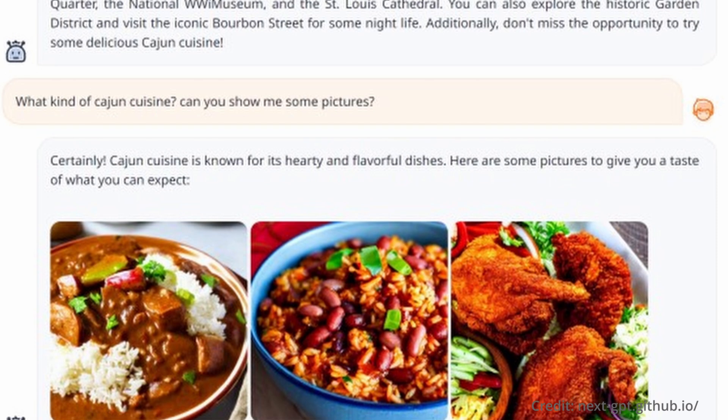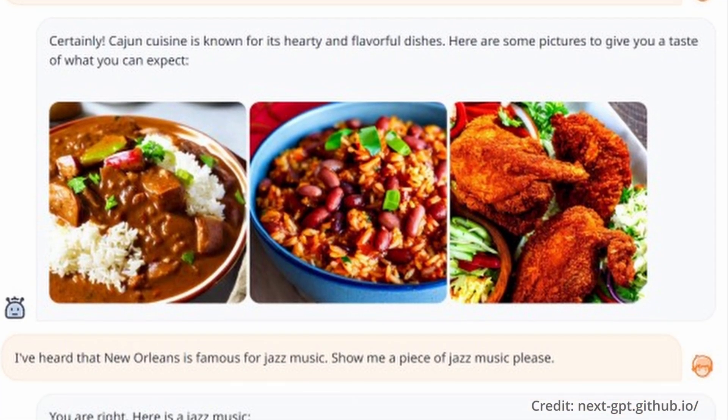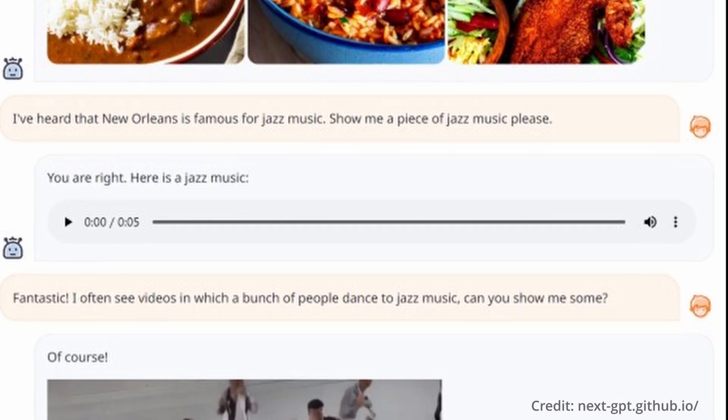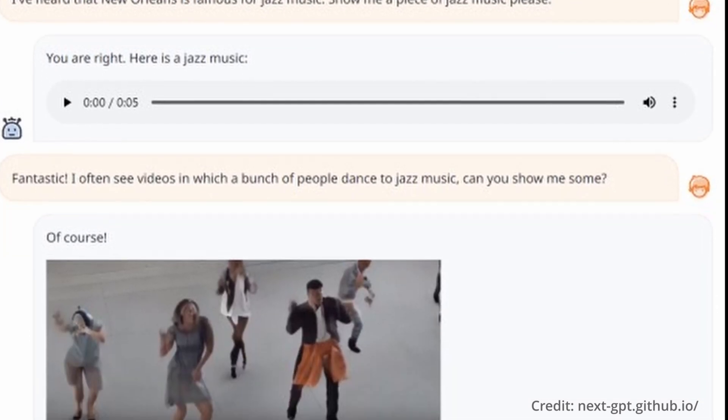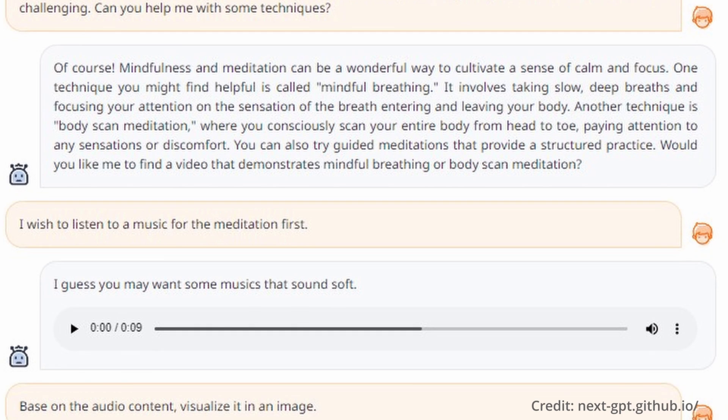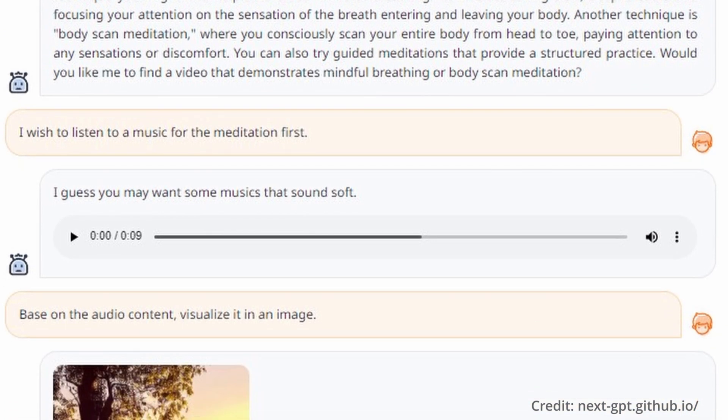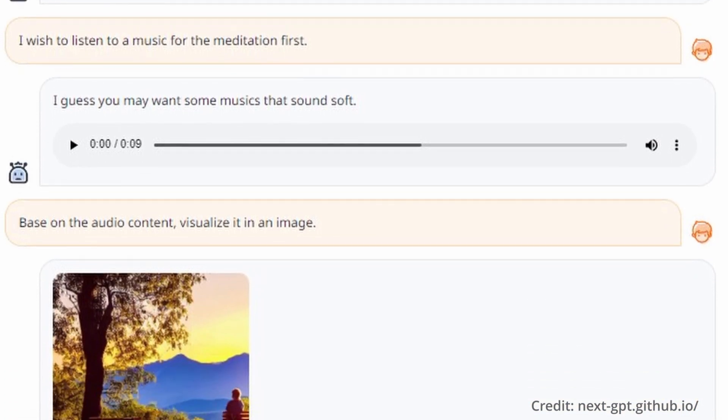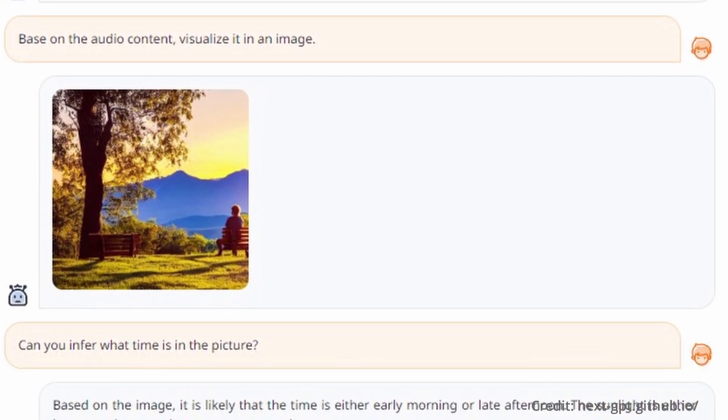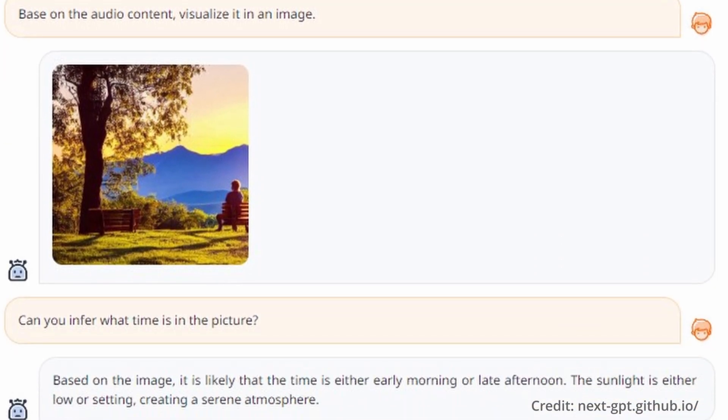Finally, NextGPT uses what's referred to as lightweight multimodal alignment learning, which aligns different input modalities with text feature space to minimize the distance between model signal token representations and the conditional text representations of the diffusion models. This alignment ensures coherent and effective interaction, bringing the AI models closer to a more human-like interaction and understanding with each other.